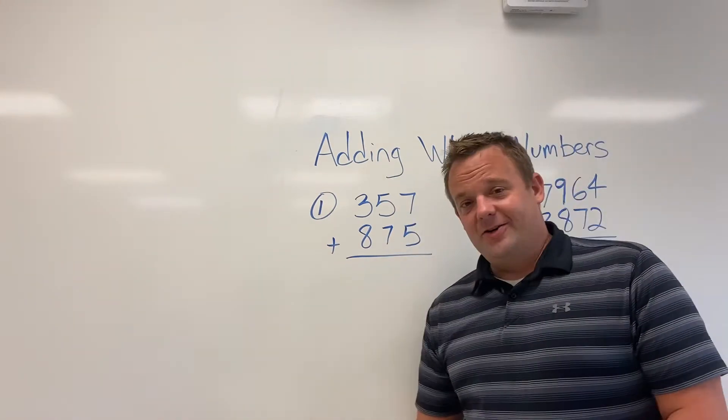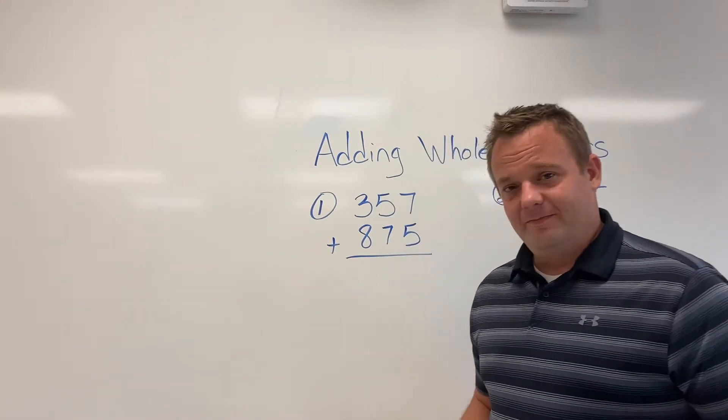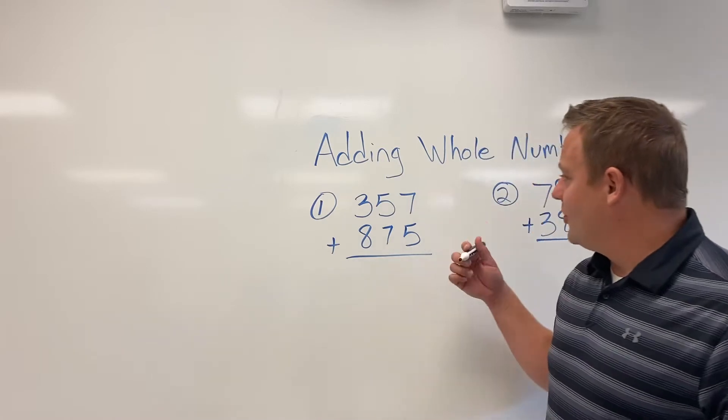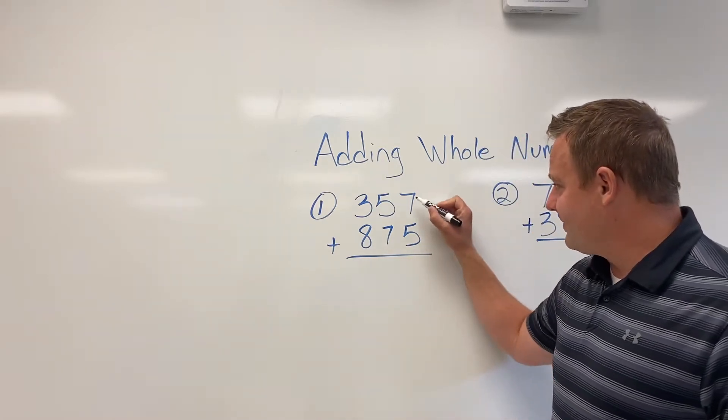We have 357 plus 875. Here's how we do it. I like using the traditional algorithm of just adding up the columns.